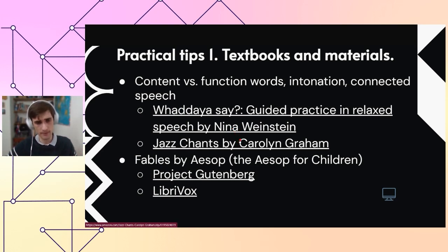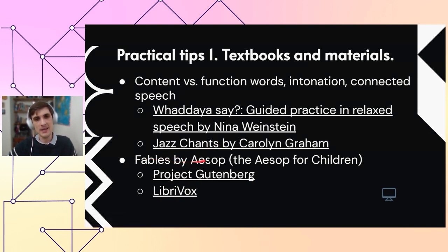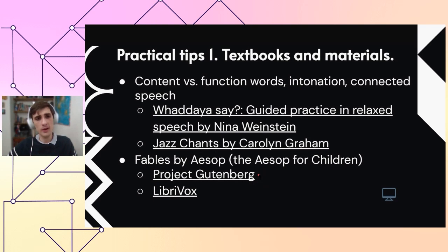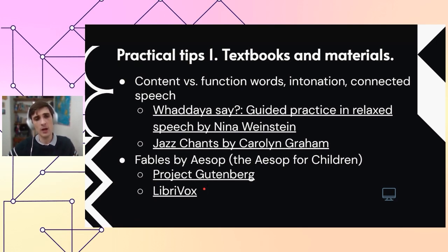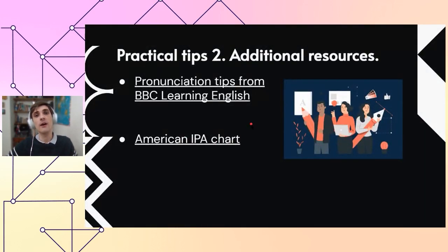Or 'Jazz Chants' by Caroline Graham — two great books with very illustrative audios. Your students would be delighted to work with them. You might even want to stage them in class. Additionally, fables by Aesop — especially the edition called 'Aesop for Children' — are in the public domain. You can find the text on Project Gutenberg and the audios on LibriVox. They're very short, illustrative, and most students are already familiar with the fables.